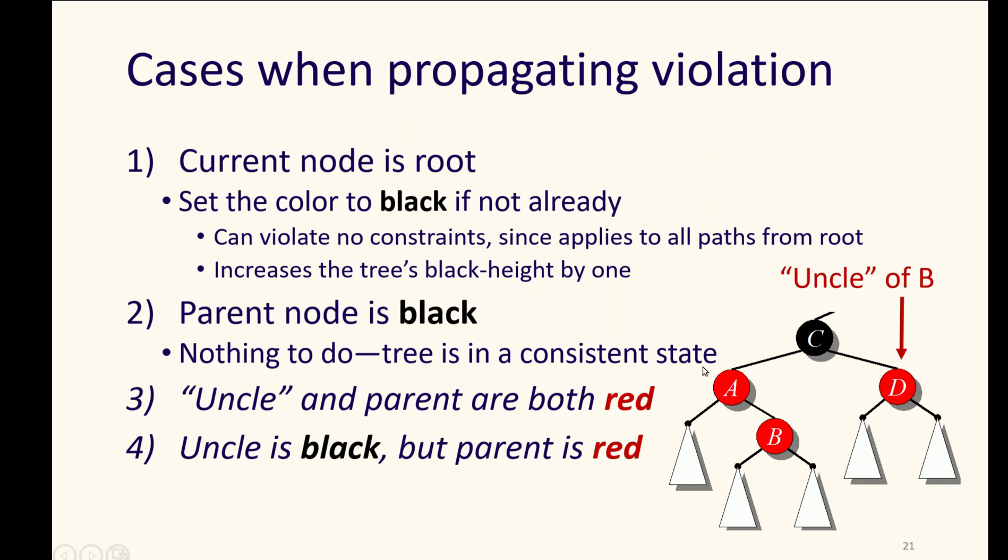So if we look at B, its parent is A, and then its parent's sibling is D over here. So if both of those are red, then this will violate our rules. And if the parent is red, but the sibling, the parent's sibling, is black, then this will violate our rules as well.